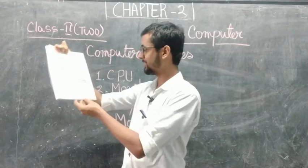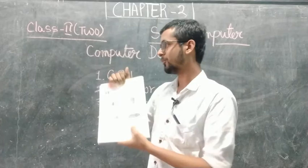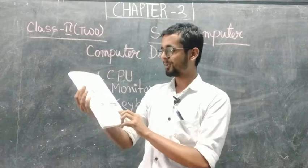Now see one more thing — the keyboard. The clue says: I have many keys, I am a keyboard. In the keyboard you can see so many keys, that's why it is called a keyboard. Now turn to page number 11.